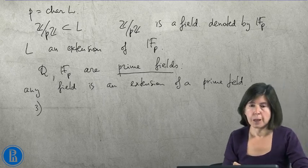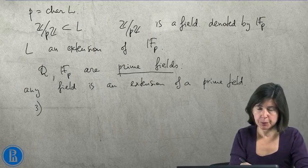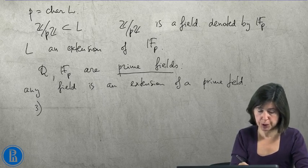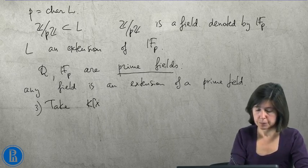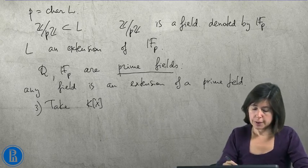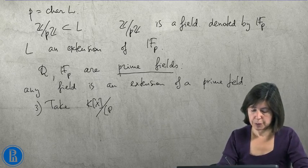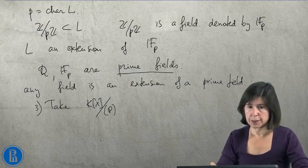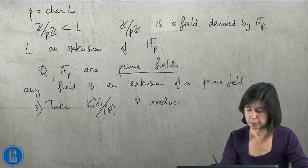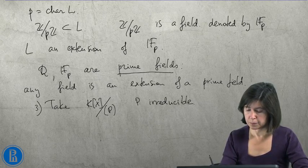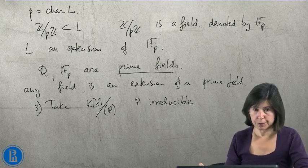Third example is very important. So let's take the ring of polynomials in one variable over K. And let's consider the quotient ring by an ideal generated by an irreducible polynomial P. Then I affirm that this is a field.